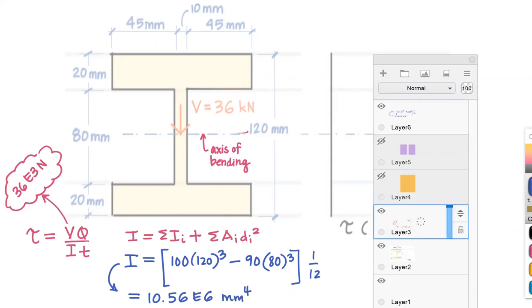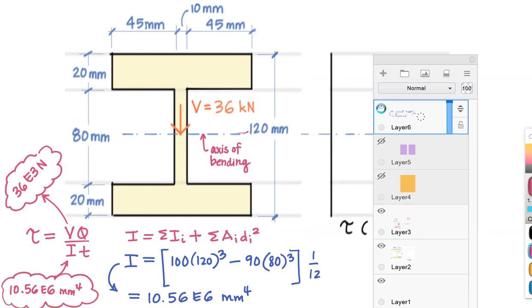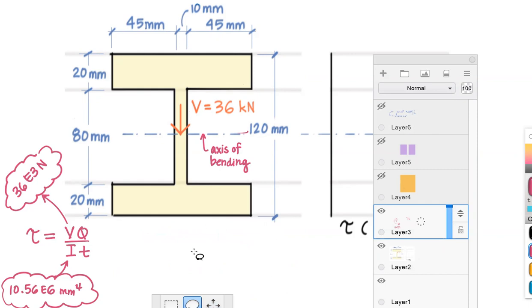You'll get 10.56 E6 millimeters to the fourth. That's what we're going to want to plug in for my moment of inertia in our shear stress equation. So lots of different steps in these types of problems. But many of these steps, for example moment of inertia, you know all about. You've done this a million times before. Maybe not a million, but at least a hundred, right?